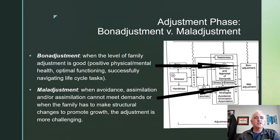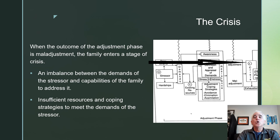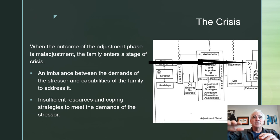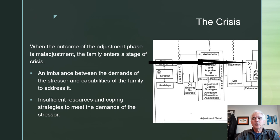When the outcome of the adjustment phase is maladjustment, the family enters a stage of crisis. This is really just the ABCX model with a few things added. There's an imbalance between the demands of the stressor and the capabilities of the family to address it — the family is like a teeter-totter, out of balance. They may not have sufficient resources or the right coping strategies to meet the demands. So now they move into crisis and then begin to adapt, which brings us to the adaptation phase on the right side of the diagram.